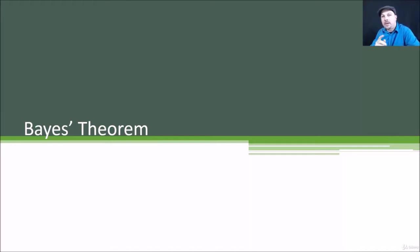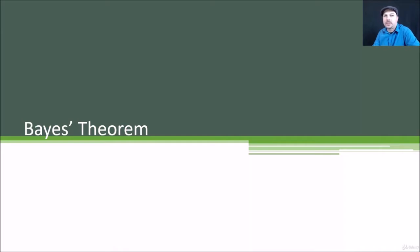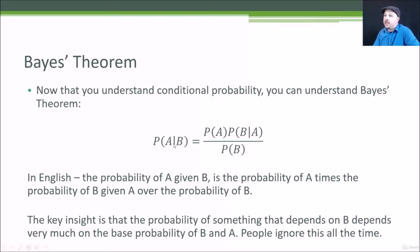You hear about this a lot, but not many people really understand what it means or its significance. So let's talk about Bayes' theorem at a high level. Bayes' theorem is simply this: the probability of A given B is equal to the probability of A times the probability of B given A, over the probability of B.